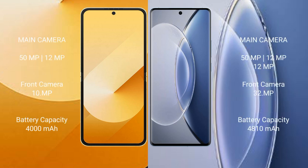Samsung Galaxy Z Flip 6 features a dual rear camera setup of 50MP plus 12MP, and a 29MP front camera. Vivo X 90 features a triple rear camera setup of 50MP plus 12MP plus 12MP, and a 32MP front camera.